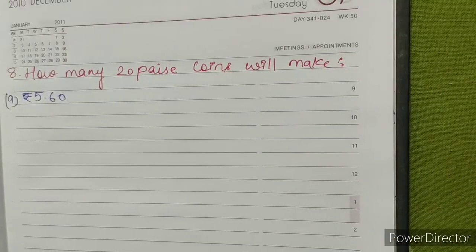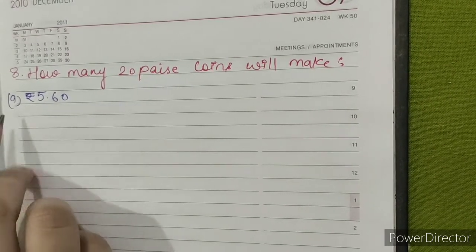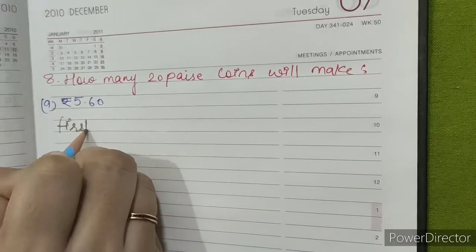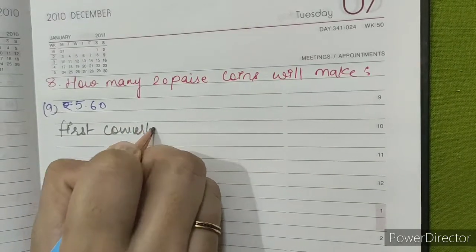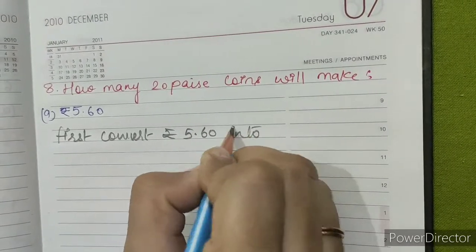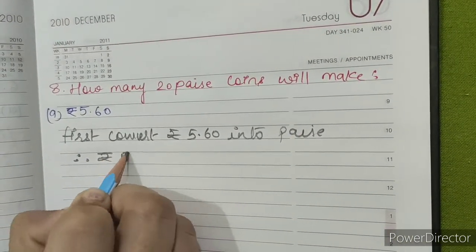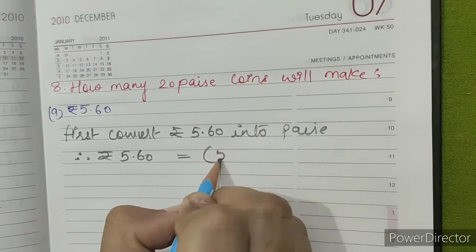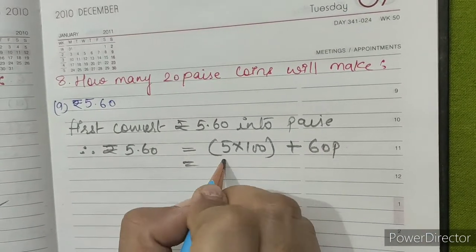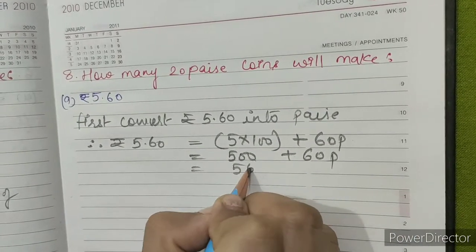Question number 8: How many 20 paise coins will make Rupees 5.60? First, convert Rupees 5.60 into paise. Therefore, Rupees 5.60 equals 5 into 100 plus 60 paise. 5 into 100 is 500, plus 60 paise. 500 plus 60 equals 560 paise.